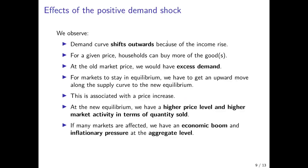To summarize: if the stimulus package is enacted, household incomes rise and this shifts the demand curve outwards. At each given price level, households could buy more of the goods under consideration — leading to excess demand, upward price pressures. For markets to stay in equilibrium, we get an upward move along the supply curve towards the new equilibrium, associated with a price increase. At this new market equilibrium, we have a higher price and higher market activity in terms of the quantity sold in equilibrium.